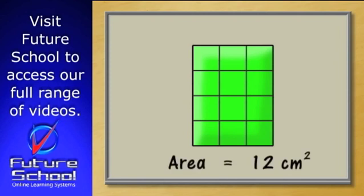This means that the area of this rectangle is 12 centimetres squared. We write this measurement down like this, 12 centimetres squared. The CM is an abbreviation for centimetre and the 2 represents squared.